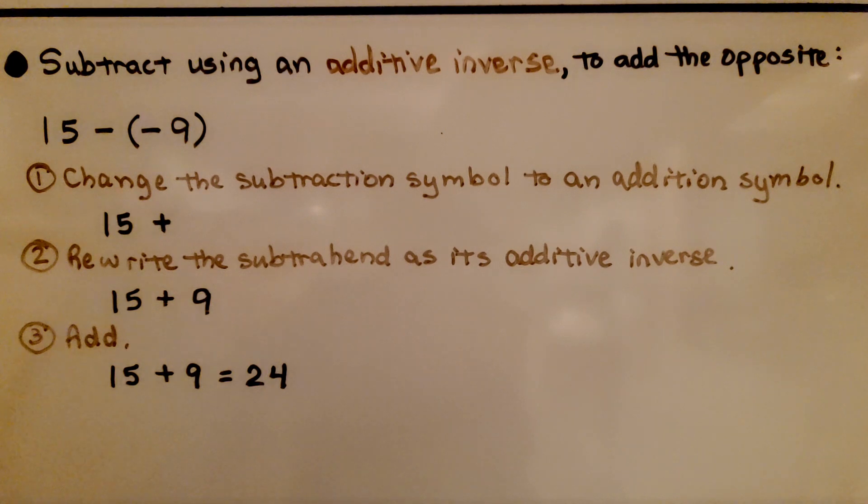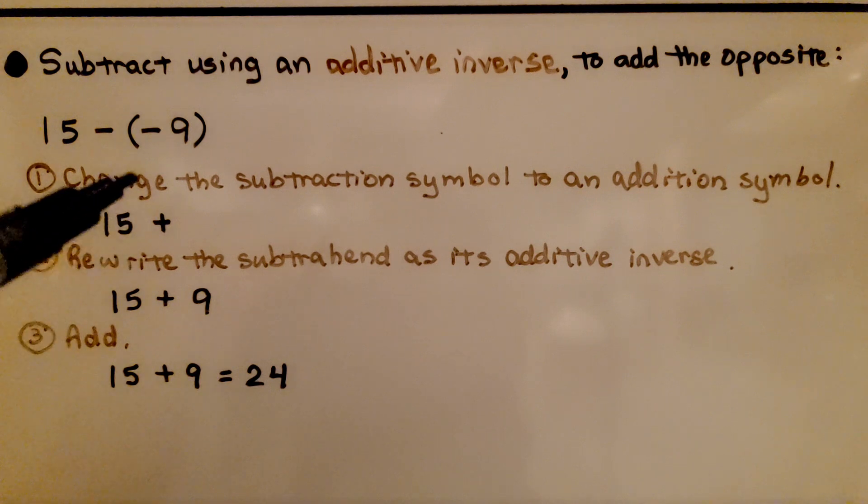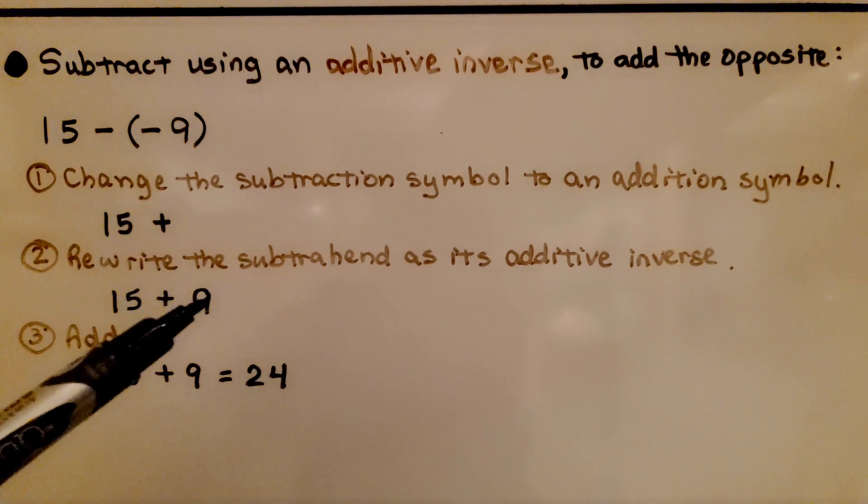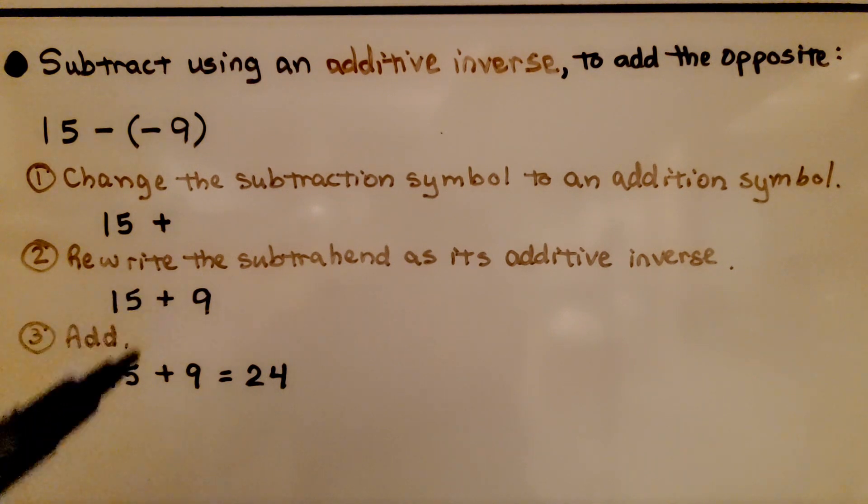Here it's telling us to subtract using an additive inverse to add the opposite. We have 15 minus a negative 9. First thing we do is change the subtraction symbol to an addition symbol, 15 plus. We rewrite the subtrahend, the negative 9, as its additive inverse, a positive 9. Now we have 15 plus 9. That's equal to 24.